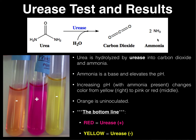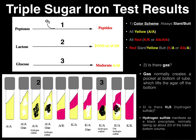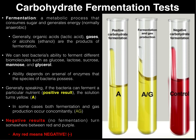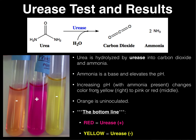Ammonia itself is a base — it's an alkaline substance — which means it's going to elevate the pH of the broth, because this test occurs in broth. So if you've got ammonia present, you would expect the pH of the broth to increase. To visualize it, we put in a pH indicator that is made into the broth. The pH indicator is the same as we saw in triple sugar iron agar and carbohydrate fermentation — it's the pH indicator phenol red.